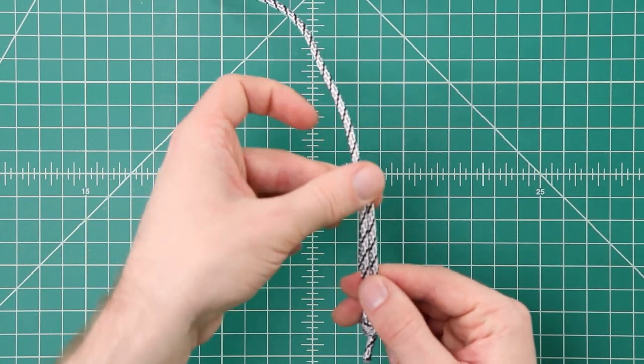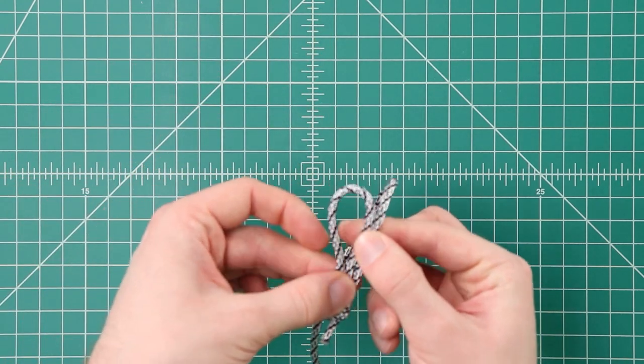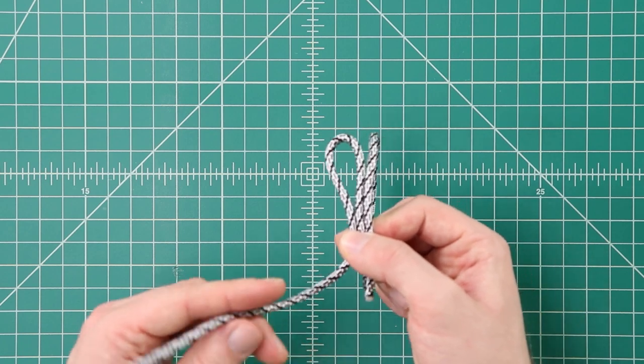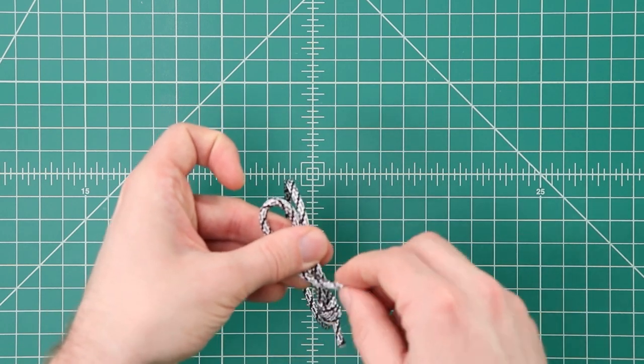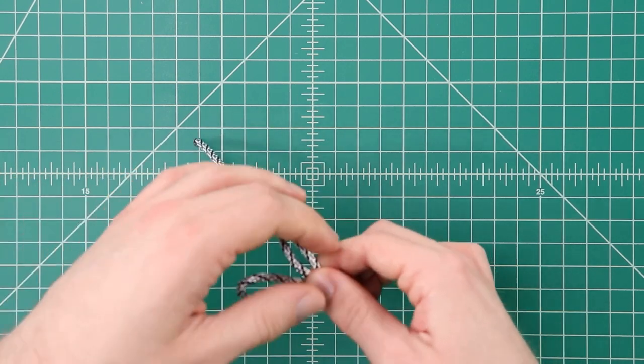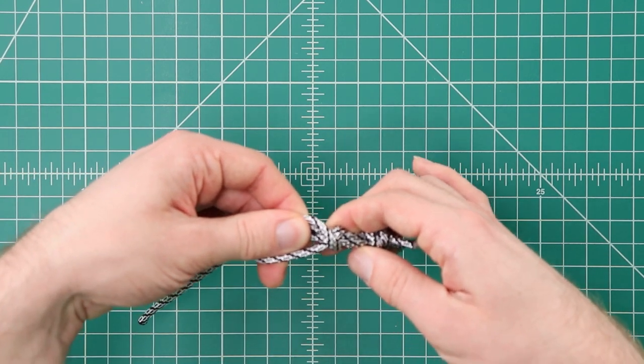Once again we're going to take this long end form a loop. This working end is going to go over everything. Wrap under and form our X. So you have that nice little X there.